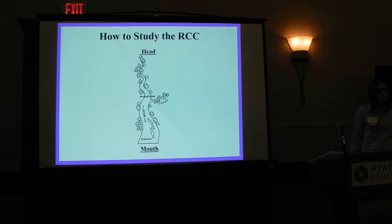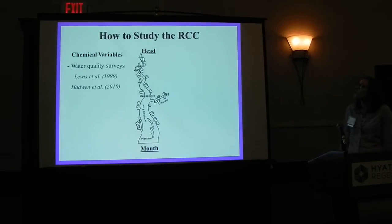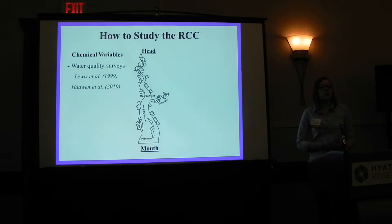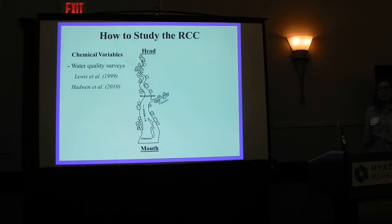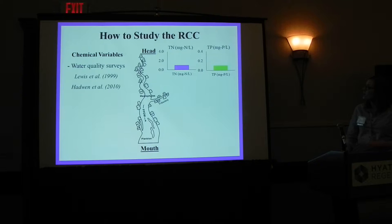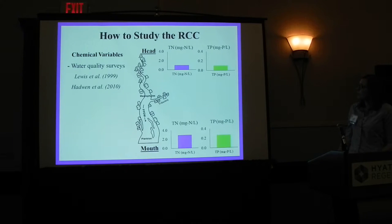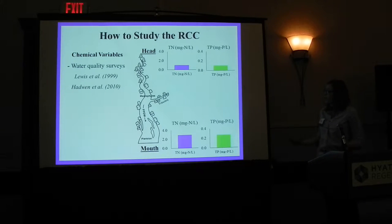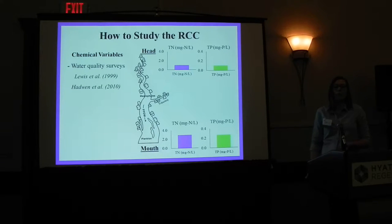There are a bunch of ways that we can study this river continuum concept. The first way is chemical variables — you can do water quality surveys. The most common way is by looking at phosphorus and nitrogen throughout the river. If you look at the headwaters compared to the mouth of the river system, the headwaters are usually lower in both phosphorus and nitrogen, and it increases towards the mouth.